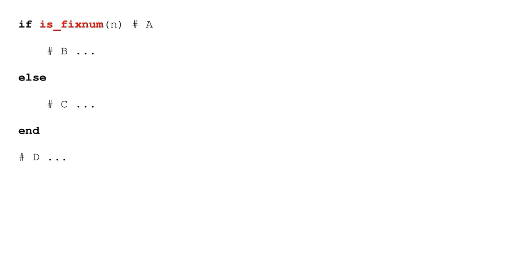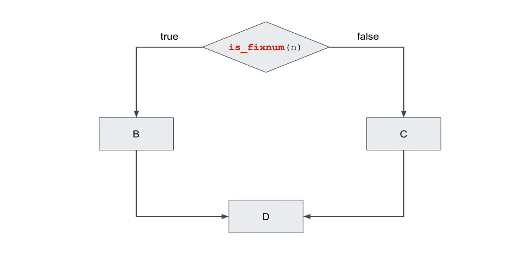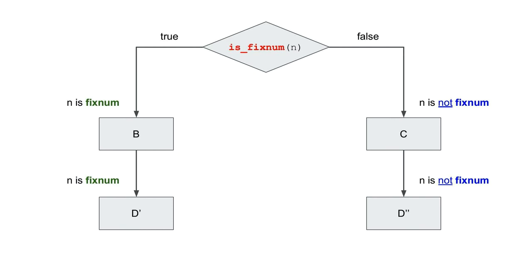If we have a type check like isFixNum(n) with two branches — block B if true, block C if false, merging at block D — then in block B we know n is a fixnum, in block C we know it's not, but at D we know nothing. You can do tail duplication: generate two versions of block D — D-prime and D-double-prime — maintaining type information across blocks. This is one of the two key ideas behind basic block versioning.